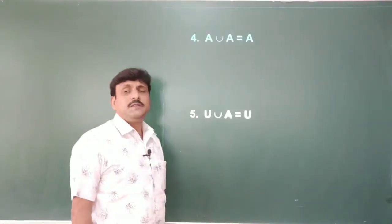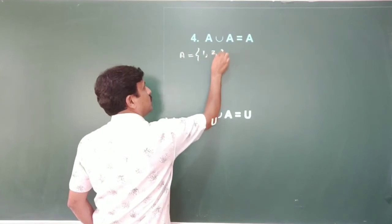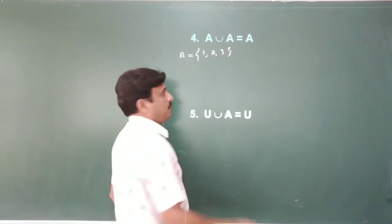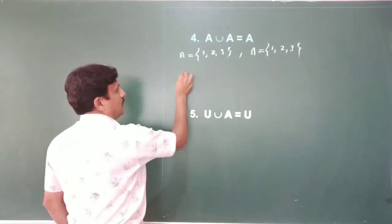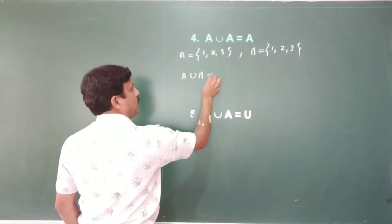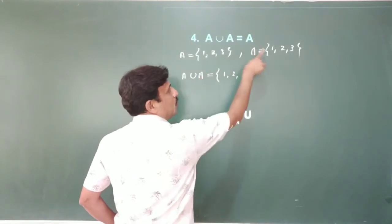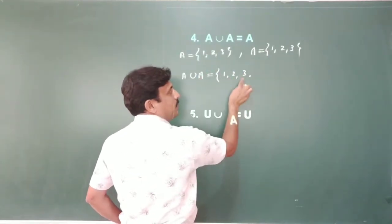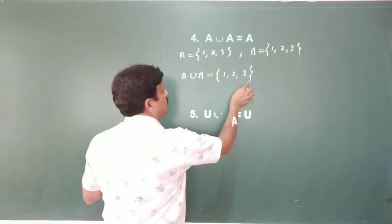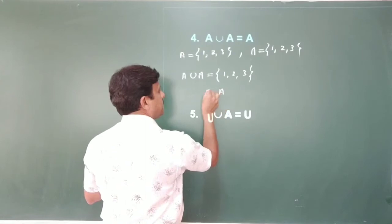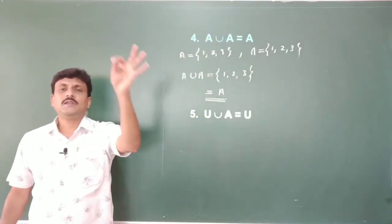The fourth law: A ∪ A = A. Example: take A = {1, 2, 3}. A ∪ A means first write A — 1, 2, 3 — then union A again, same set, all elements repeat. So write only once: 1, 2, 3 — nothing but the set A. Therefore the property A ∪ A = A always holds.